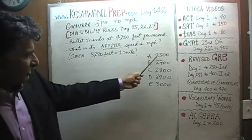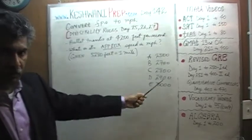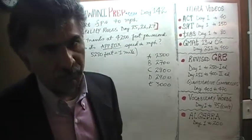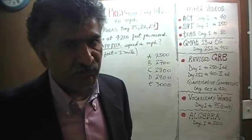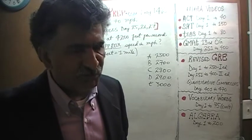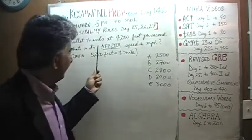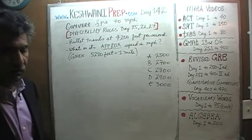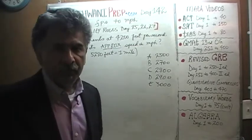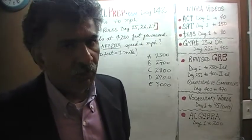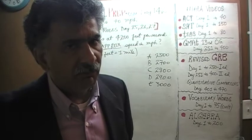As we look at the answer choices, we notice that all the numbers are multiples of 100, which means they are looking for an approximate speed rounded to the nearest 100. Even though they do not say it here, looking at the answer choices, we can come to the conclusion that they are looking for a speed rounded to the nearest 100.